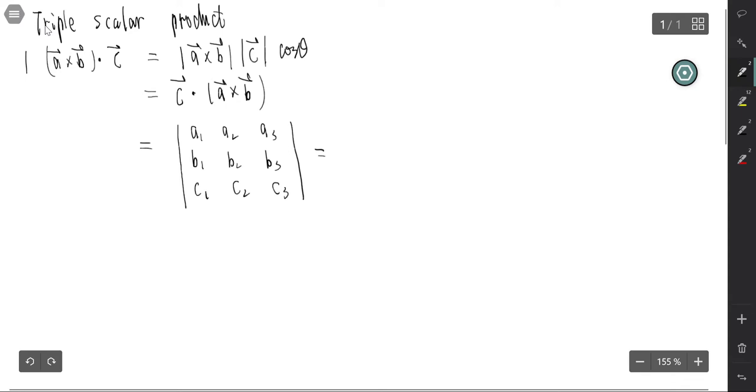Actually, we can write as C1, C2, C3 in the first row, then A1, A2, A3, and B1, B2, B3.